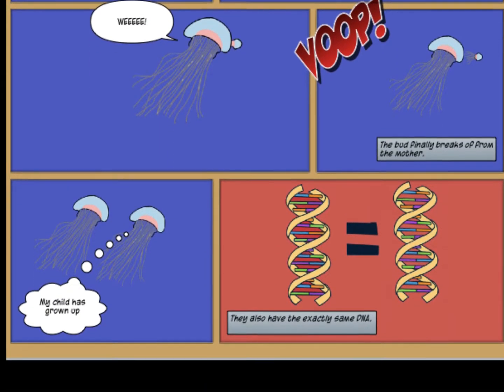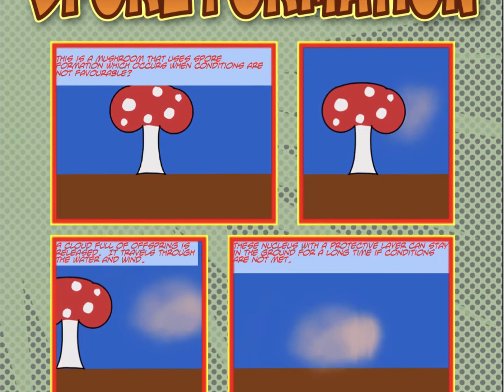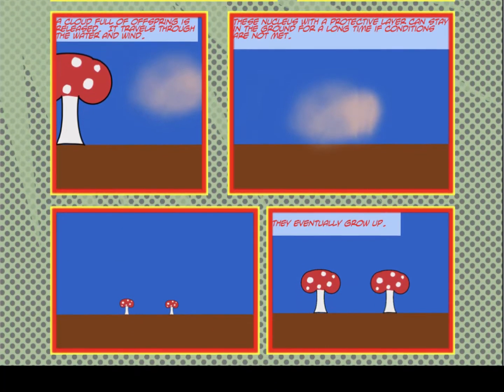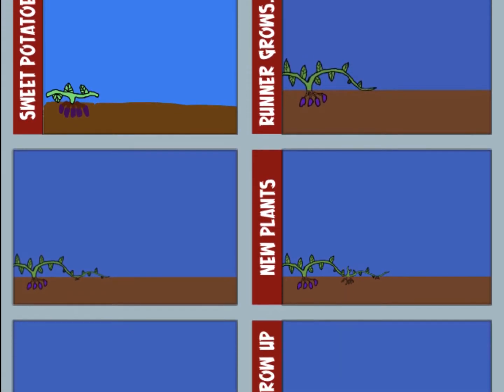There are five different forms of doing asexual reproduction, all of which are being displayed currently through comic strips.